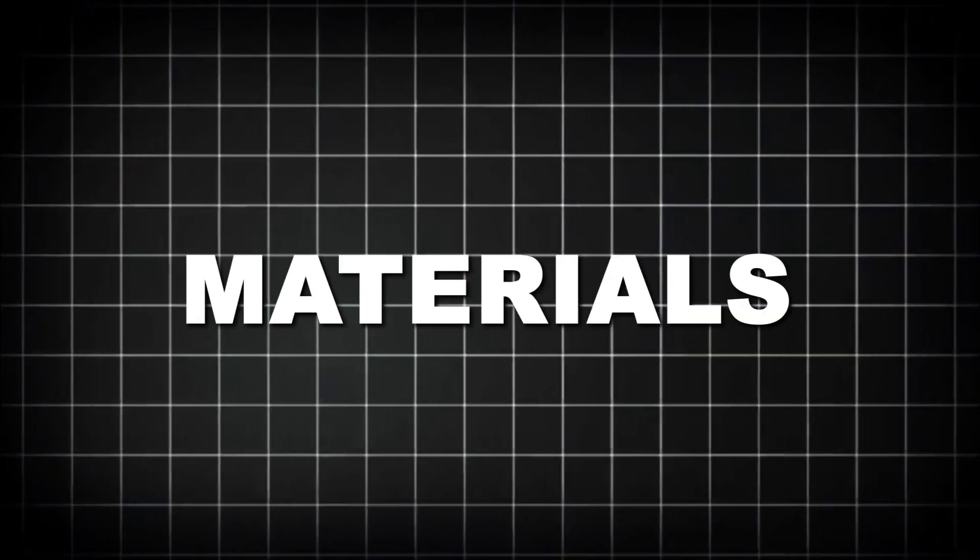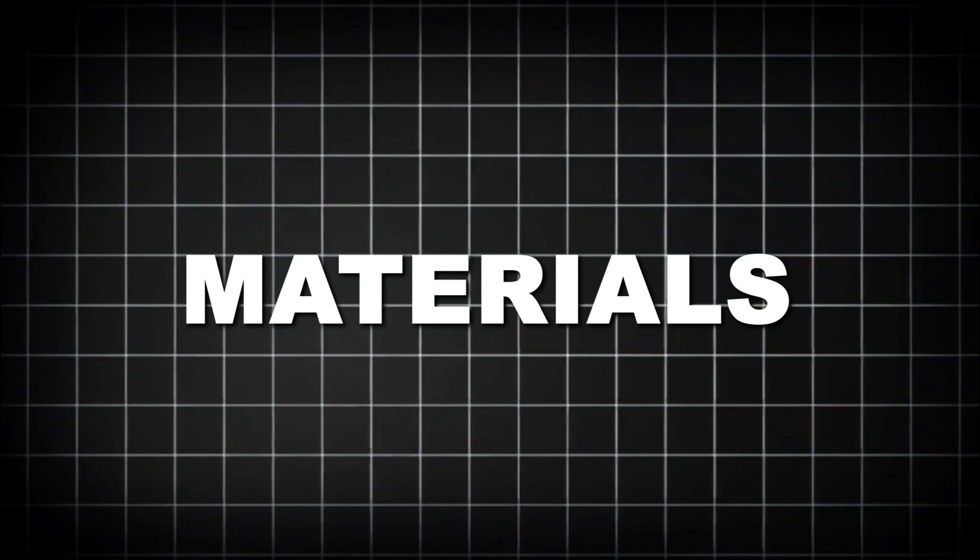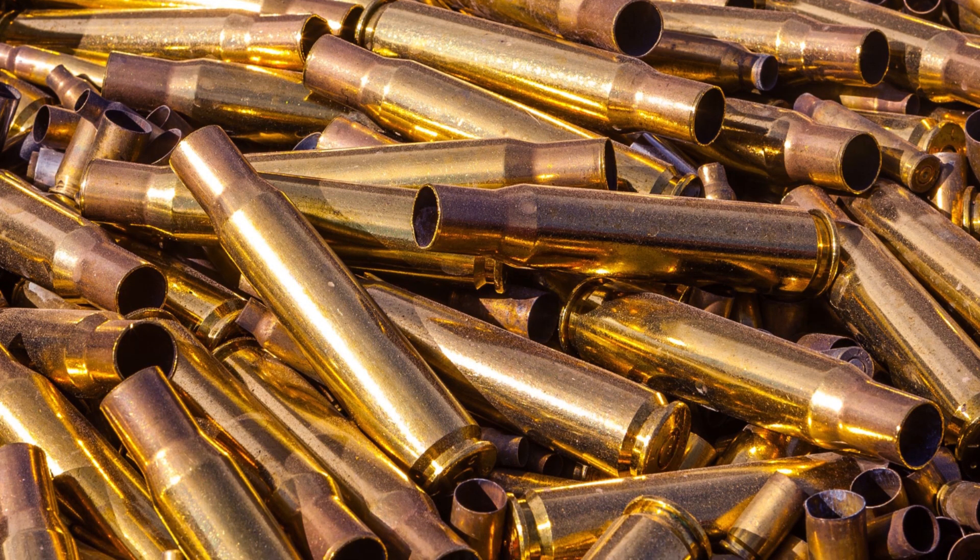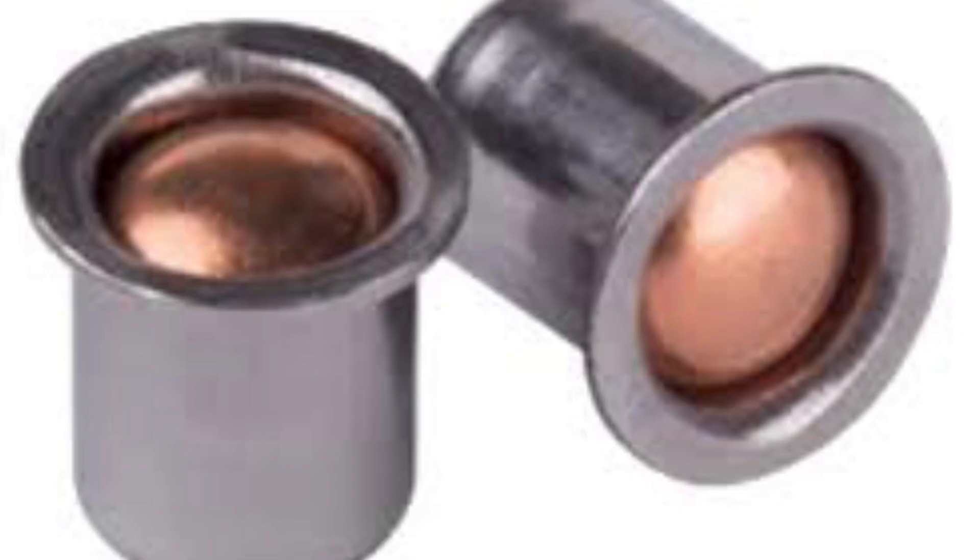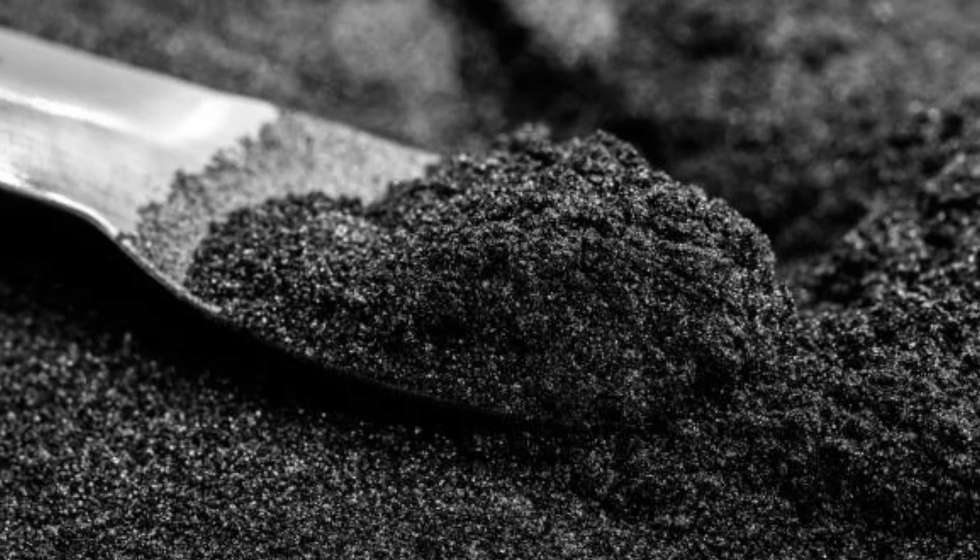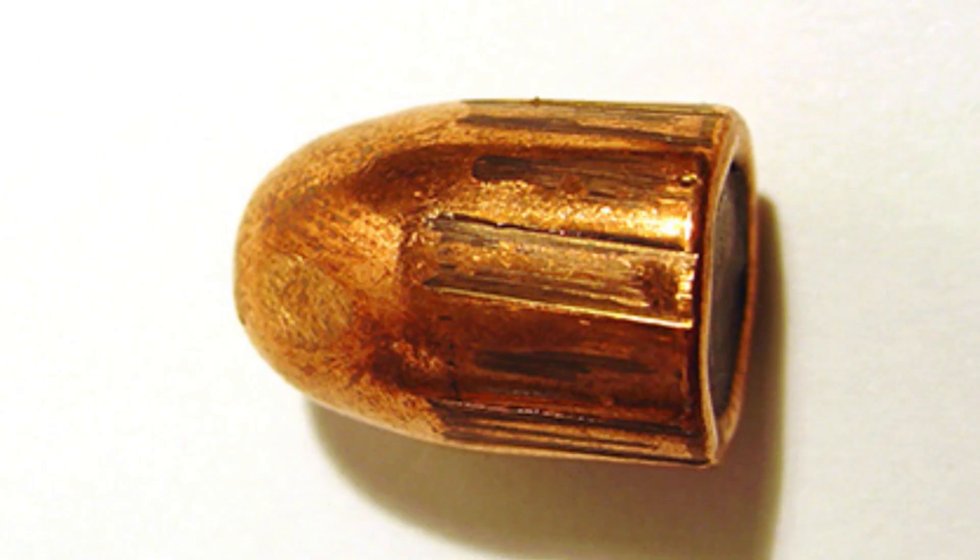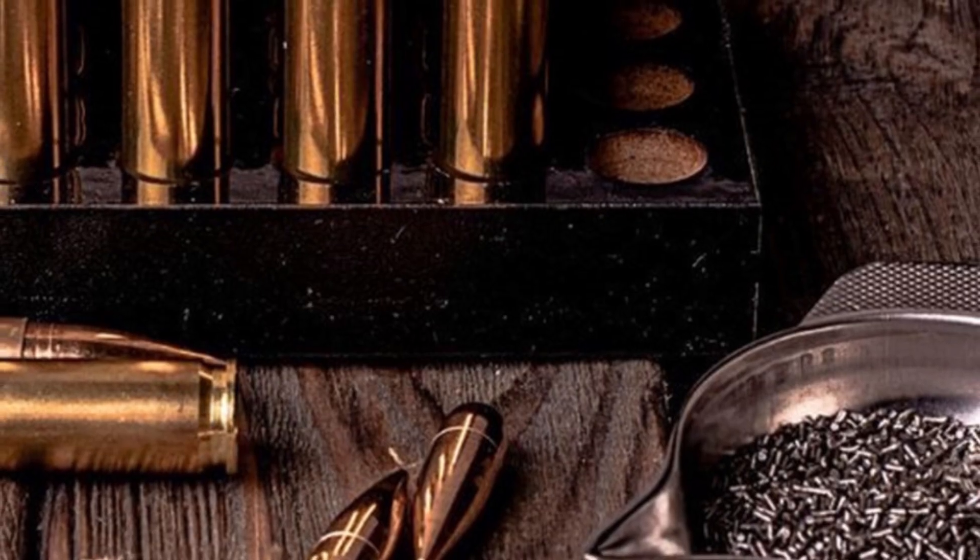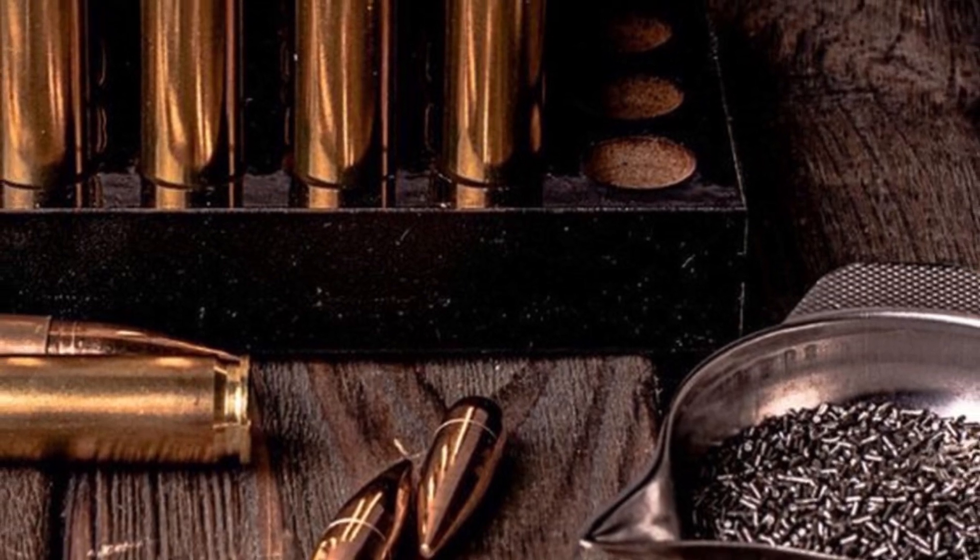Modern ammunition starts with four basic components: the brass case, sometimes called the shell, the primer, the propellant powder, and the projectile itself. Each requires specific materials with unique properties.